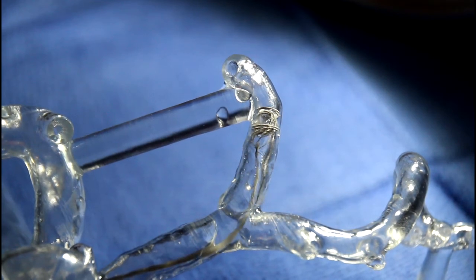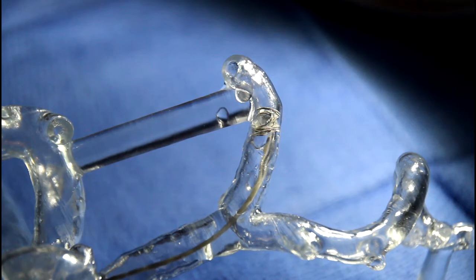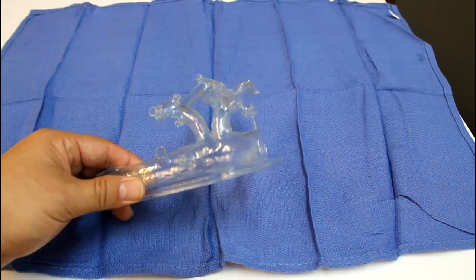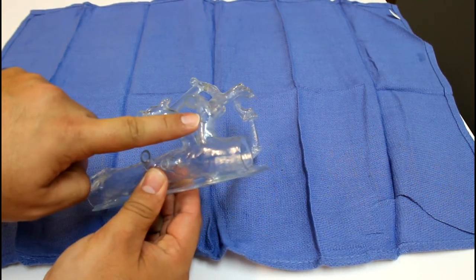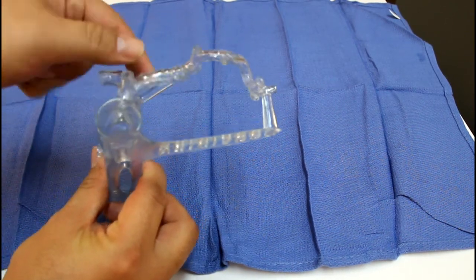Your aortic model has three access ports that are strategically positioned to allow you to retrieve coils that are deployed within the hepatic arteries and their branches.